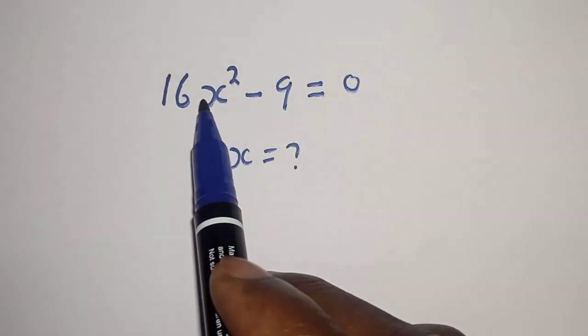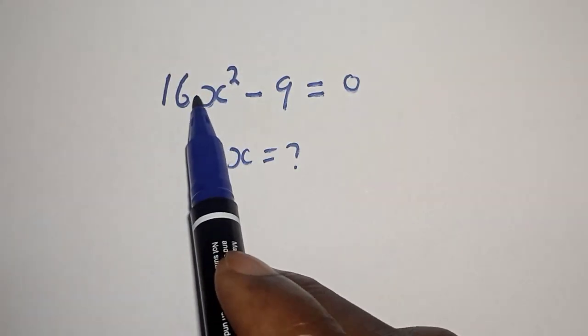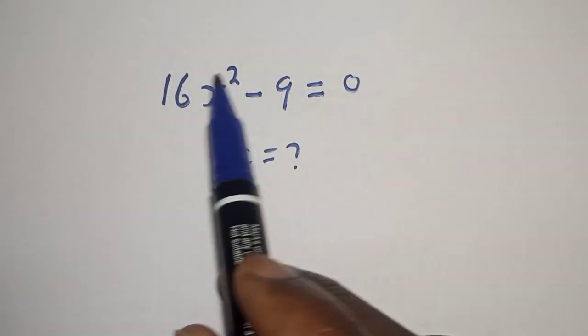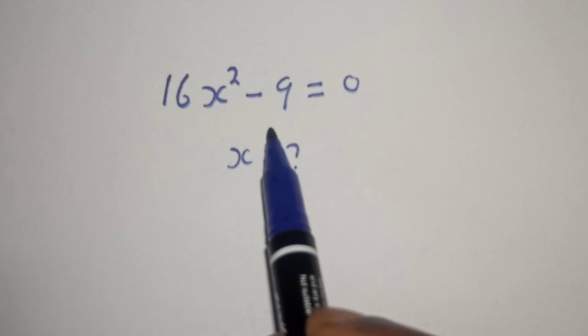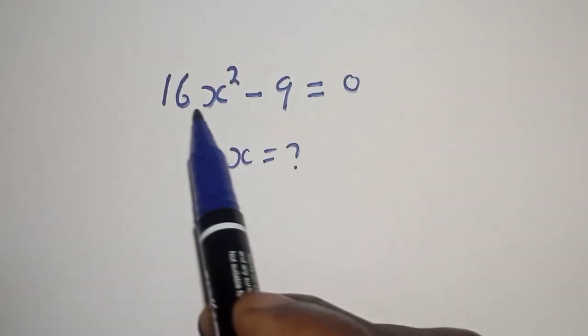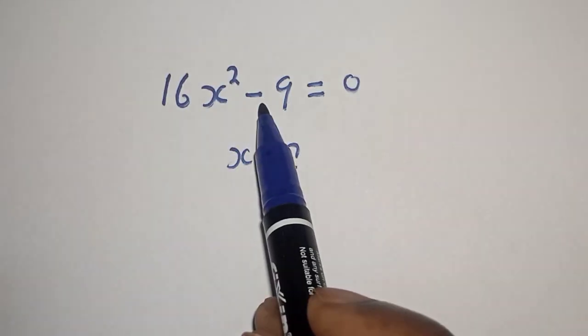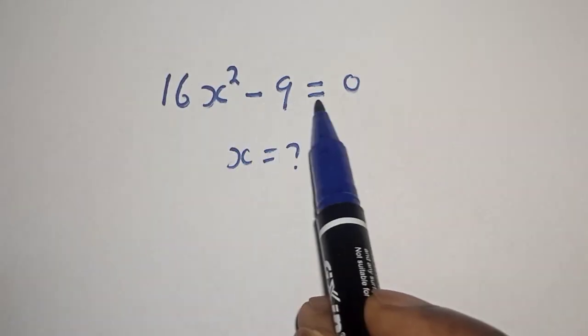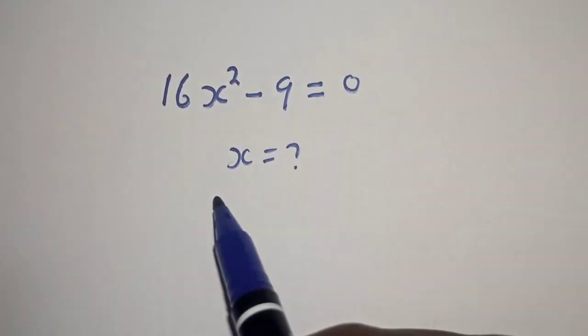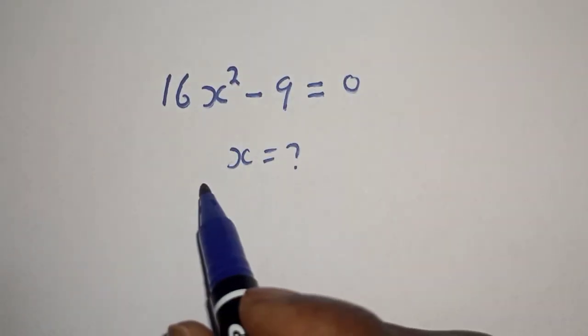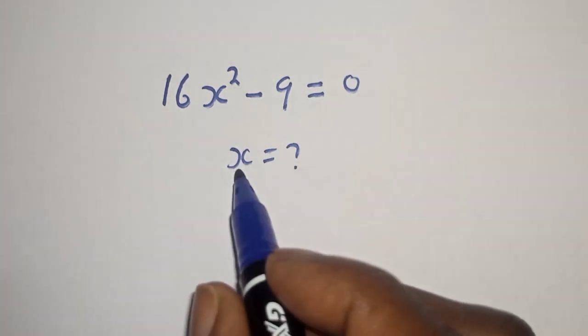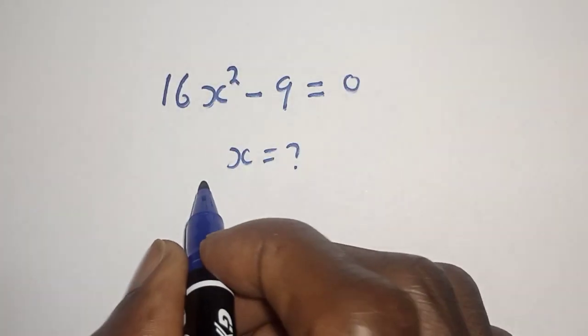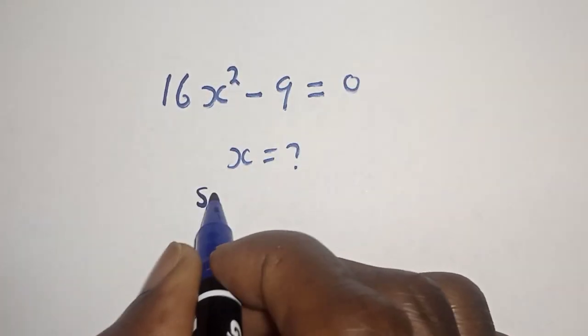Hello, welcome to Magis. In this class we want to find the value of s from this given equation: 16s² - 9 = 0. Like, share, comment and subscribe. Solution: